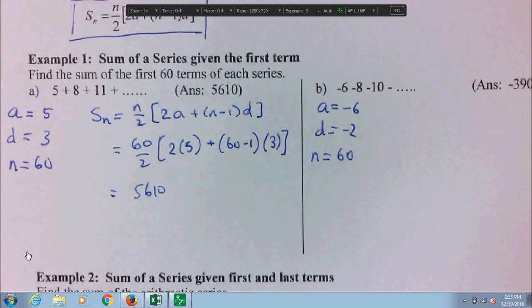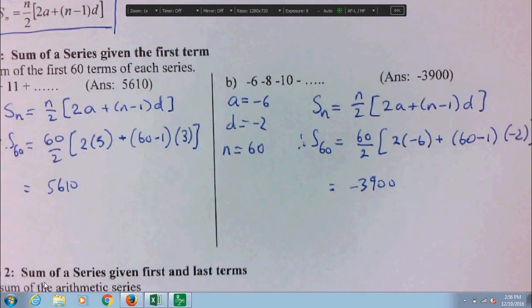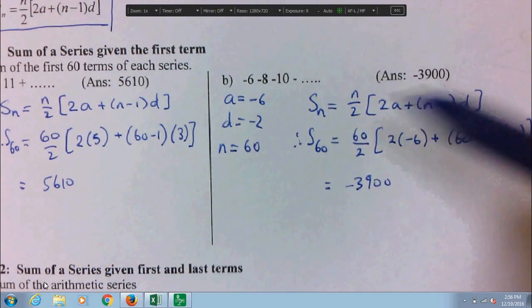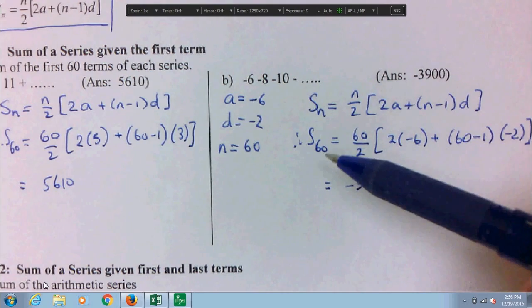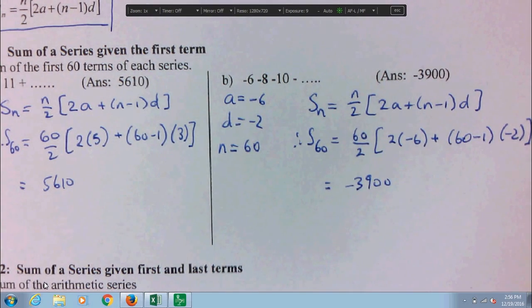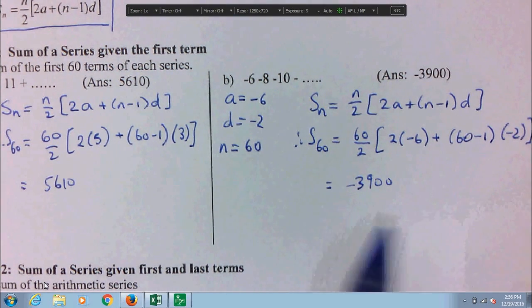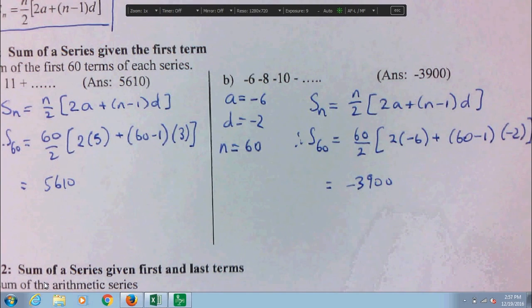Go ahead and do that one. Pause your video and do it on the side and then come back and check with me. Hopefully you figured out where to put the numbers. We're just writing the formula for Sn first. The next line should be, therefore, S60 equals. We're already substituting in for the n. I forgot to write it over here, but I should have. Put in all the numbers and you get negative 3900.